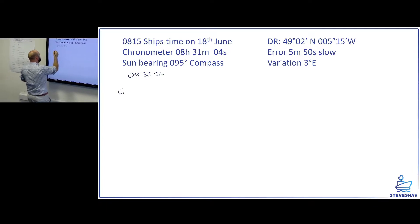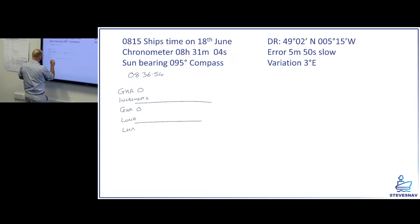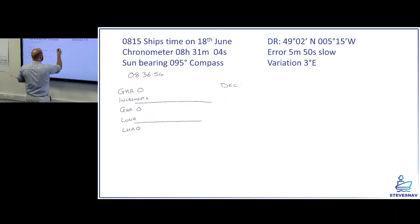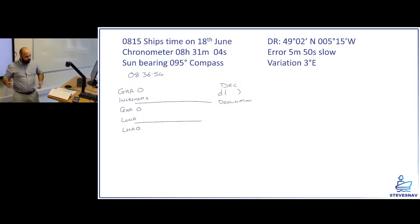Now what I need to get, I need to get a GHA of the sun and then I'm going to have to add the increments. Once I've done that, that's going to give me the actual GHA of the sun. I can apply my longitude and that will give me the LHA of the sun. I also need a declination. So the declination I'm going to apply a D correction to and then that's going to give me the actual corrected declination for the time. Because obviously the GHA that we get and the declination we get, they're for the whole hour requirement, we're going to be somewhere in between.